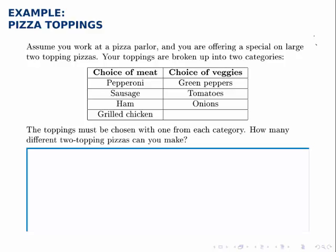Assume you work at a pizza parlor and you're offering a special on large two-topping pizzas. Your toppings are broken into two categories: meat and veggies. The toppings must be chosen with one from each category — in other words, they have to choose a meat and a veggie. How many different two-topping pizzas can you make under this restriction?